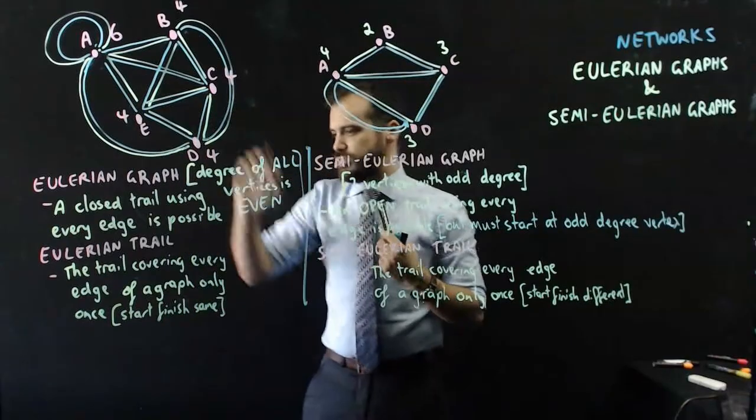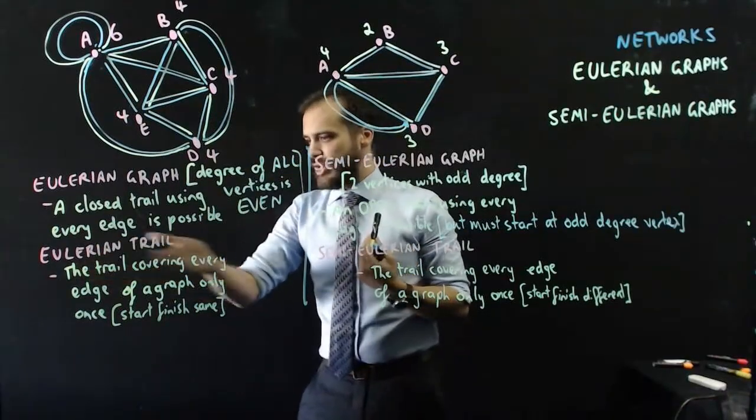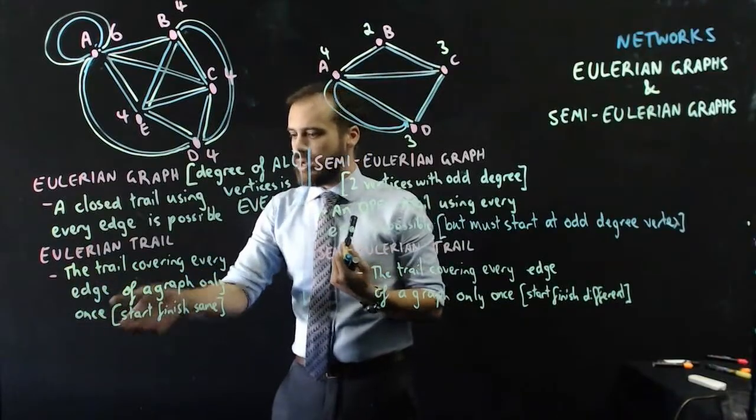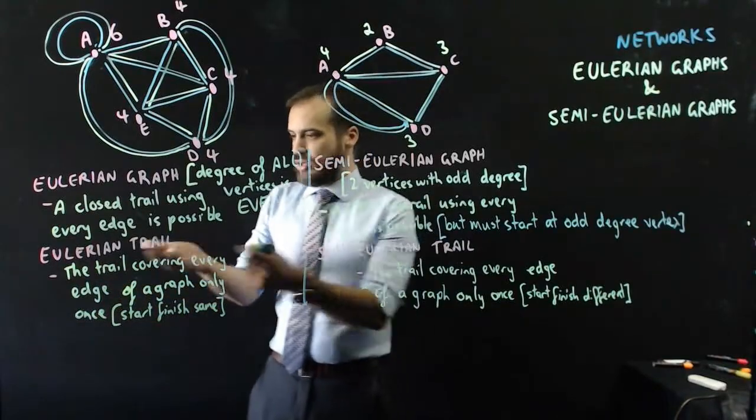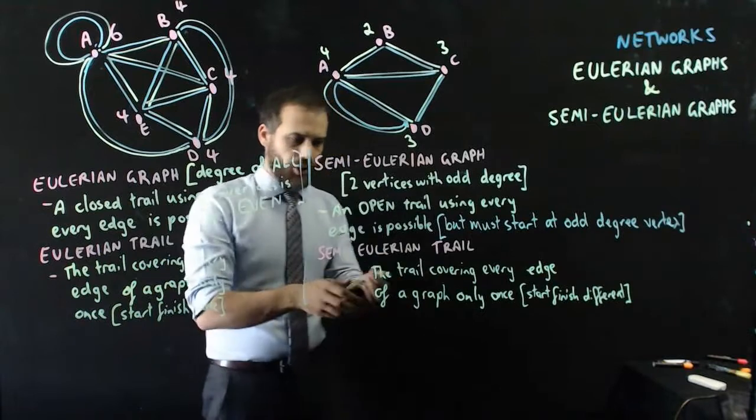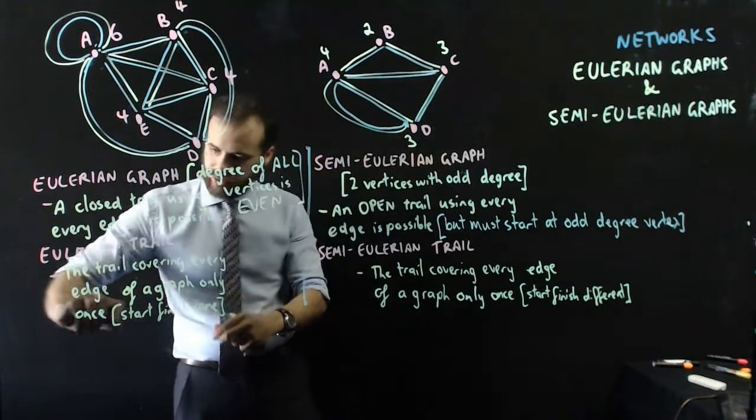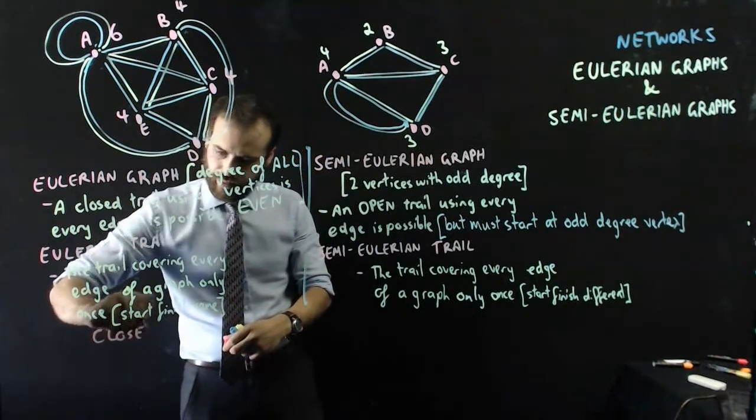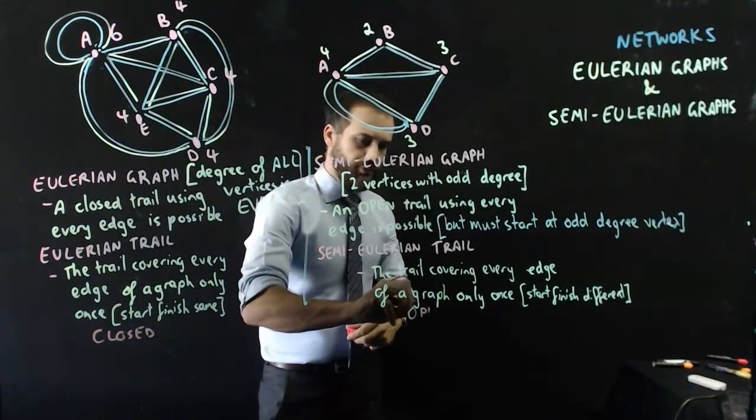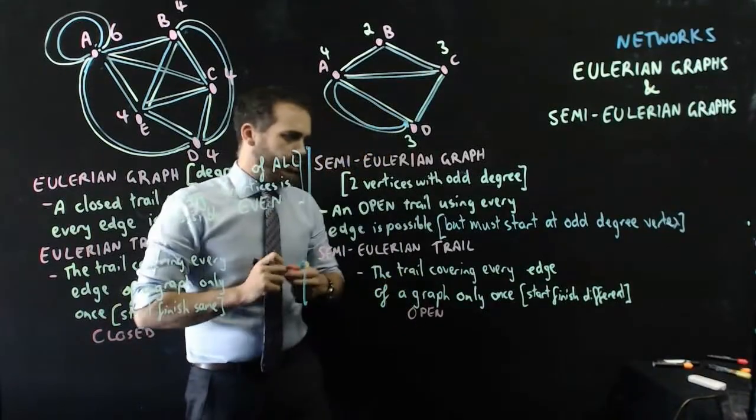You remember I started at D and finished at C. In this one, an Eulerian trail is the trail covering every edge of a graph only once where the start and the finish are the same. Closed trail, closed, closed, open.